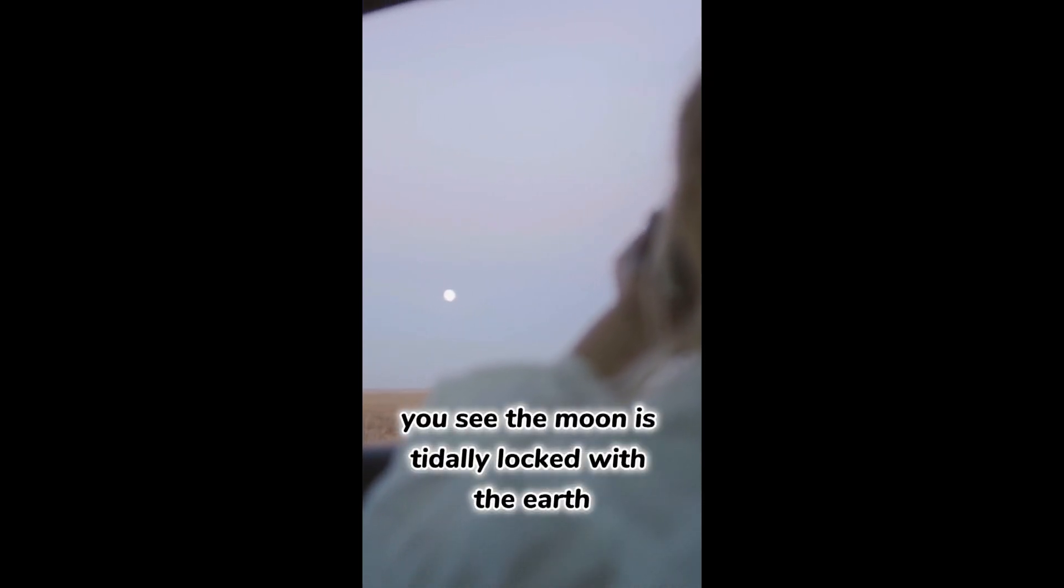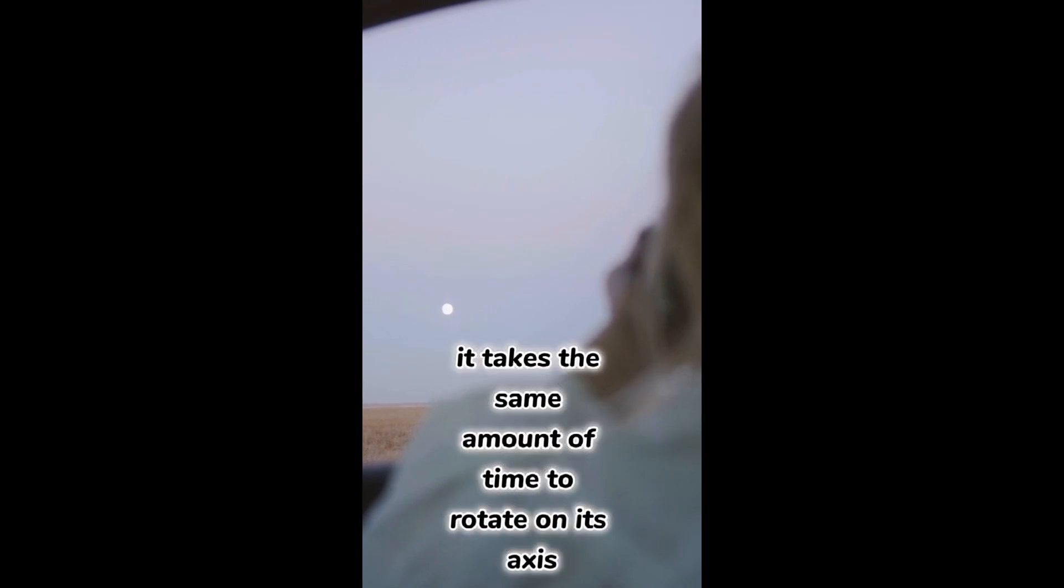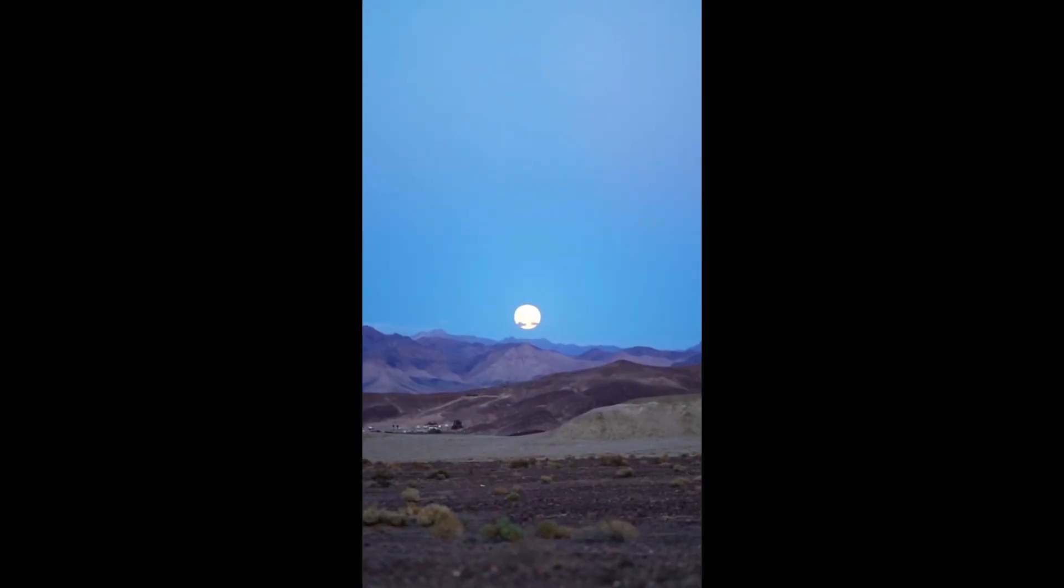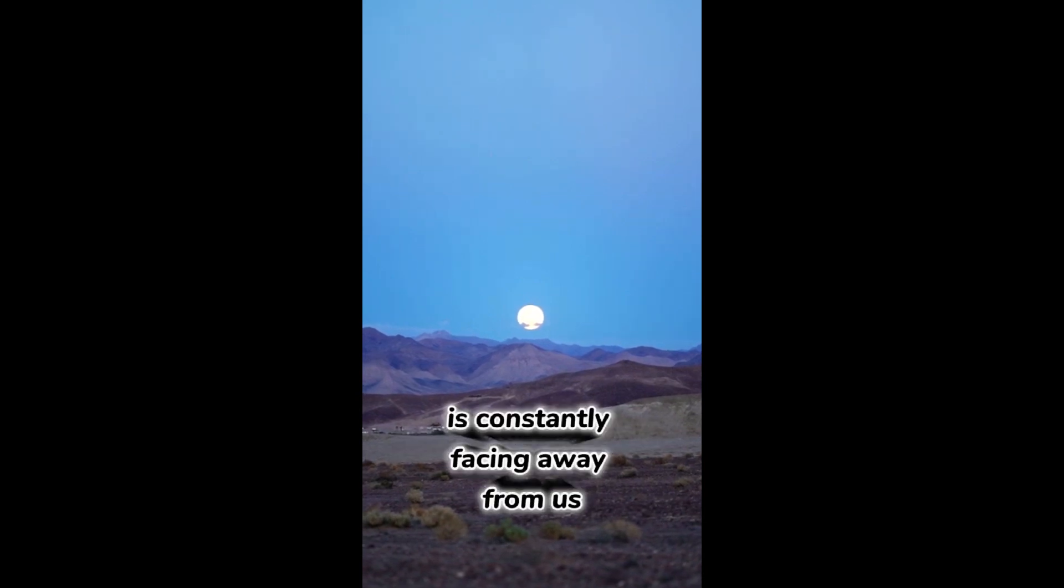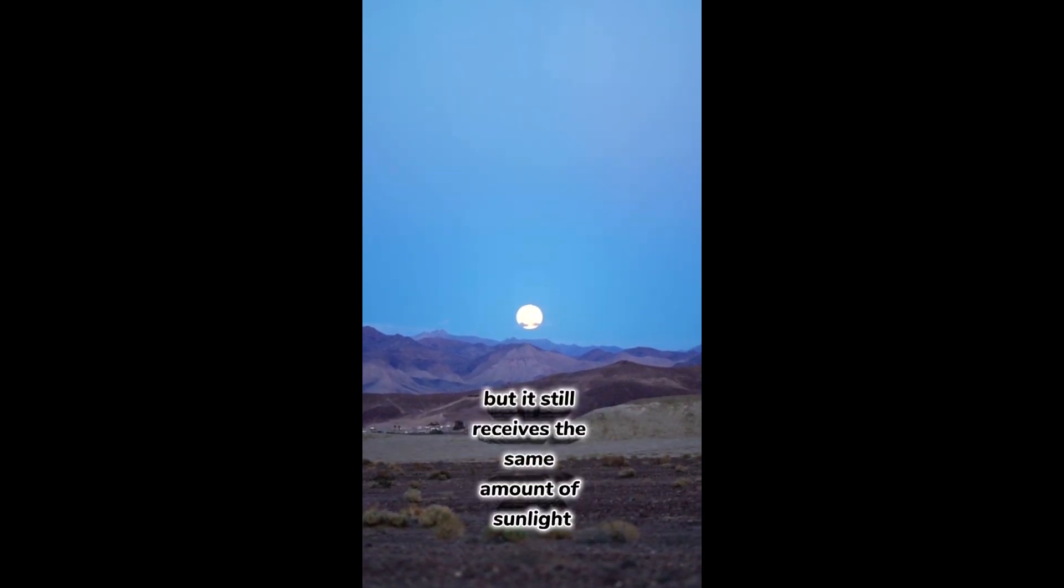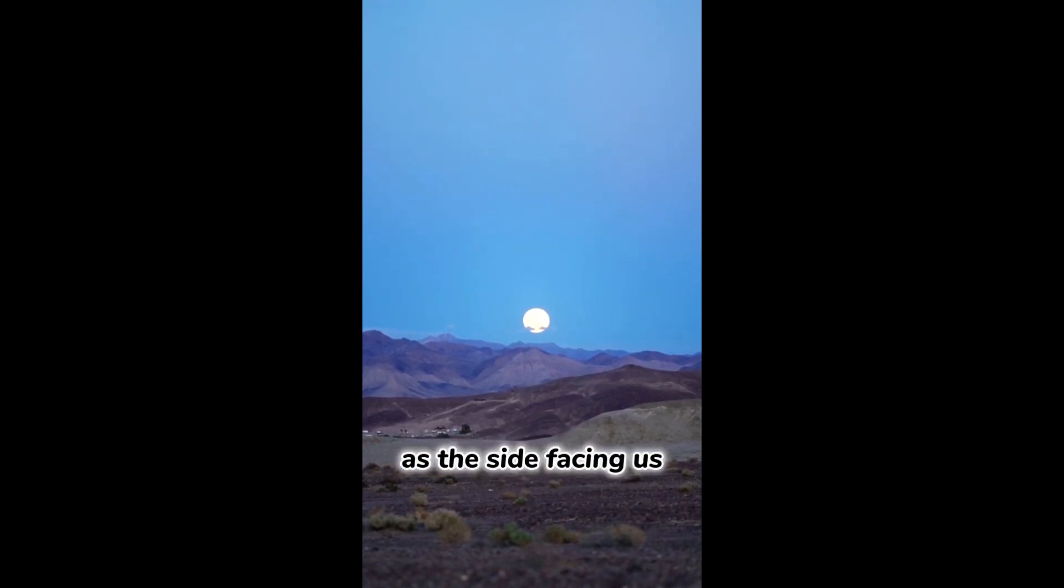You see, the moon is tidally locked with the Earth, which means it takes the same amount of time to rotate on its axis as it does to orbit the Earth. So the far side of the moon is constantly facing away from us, but it still receives the same amount of sunlight as the side facing us.